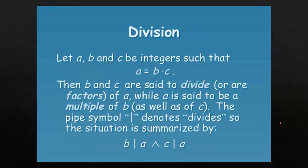First, let's move towards divisibility. Let a, b, and c be integers such that a equals b dot c, where this dot function is multiplication. Then b and c are said to divide or be factors of a. This denotes that b and c are divisors or factors. In other words, b and c are factors of a, while a is said to be a multiple of both b and c.